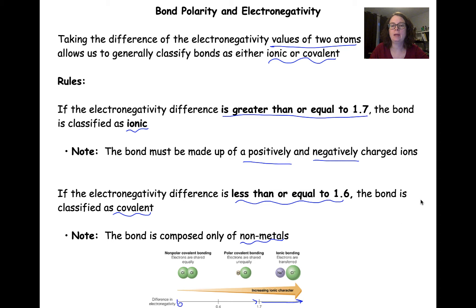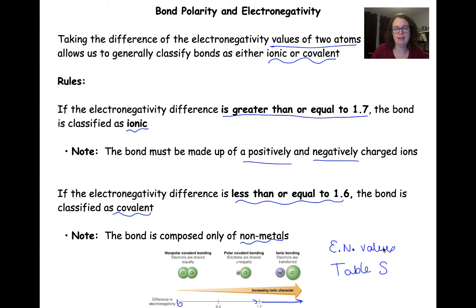Our electronegativity values are all found on Table S in our reference tables. We can look up the actual values there and compare them to determine if we have a covalent or an ionic bond following these rules.